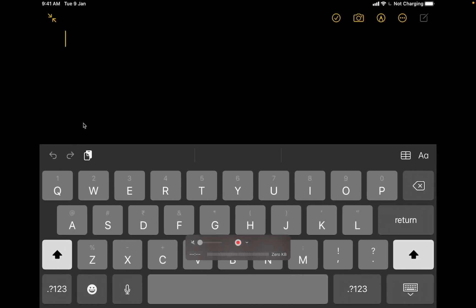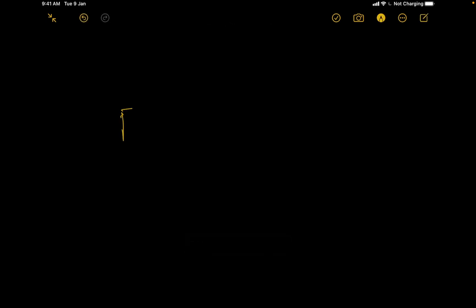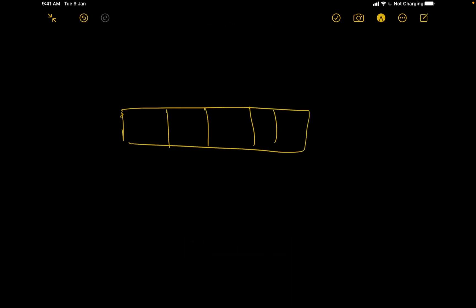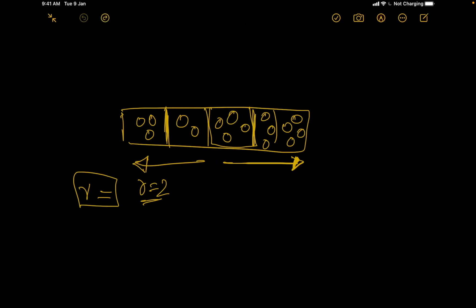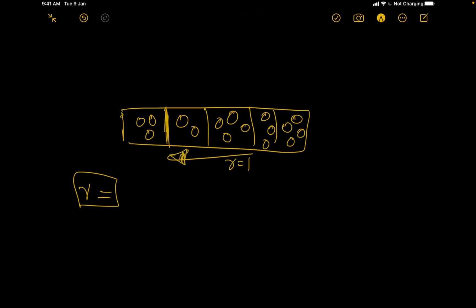Let's visualize this with a grid where power stations exist in cities. If r equals 2, a city can fetch power from two cities on either side — from power stations within distance 2. If r equals 1, it can only fetch power from immediate neighbors. So each city's power comes from its own stations plus those within range r on both sides.